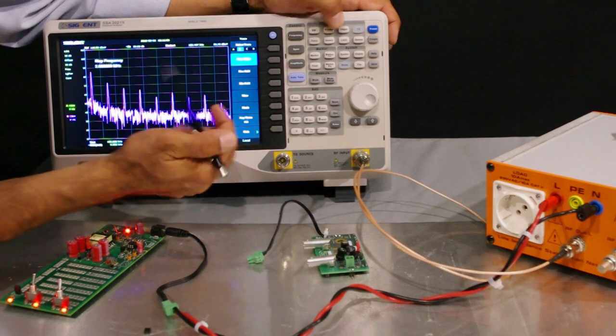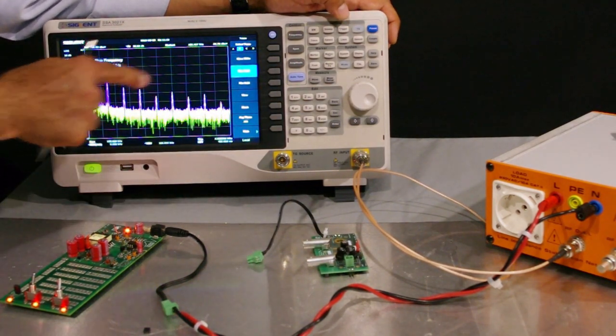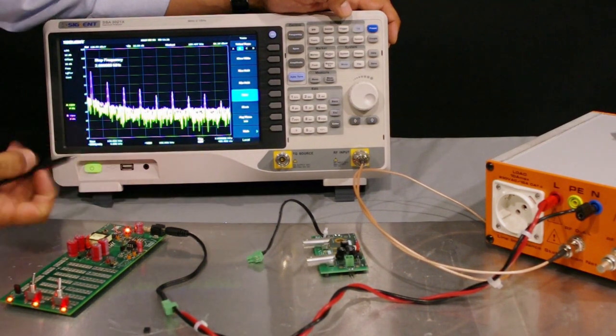If I press max hold button just for a few seconds, that holds the maximum, and then I just press the view button and that freezes it.